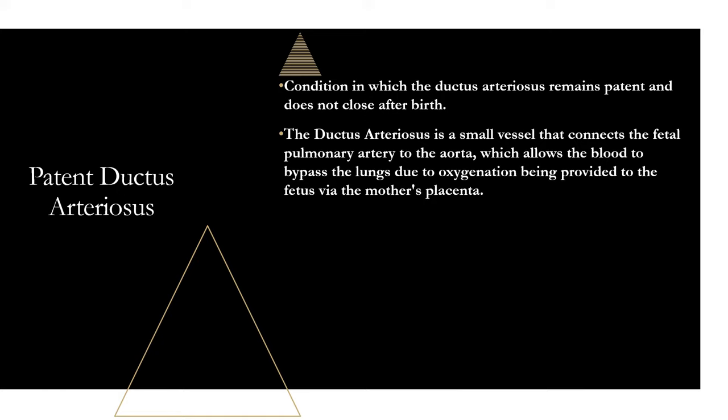Second question: what are the four abnormalities seen in Tetralogy of Fallot? Those are: right ventricular outflow obstruction, right ventricular hypertrophy, VSD, and overriding aorta. Remember 'CRAVE' — the R stands for right ventricular outflow obstruction and right ventricular hypertrophy; V stands for VSD; A stands for overriding aorta.